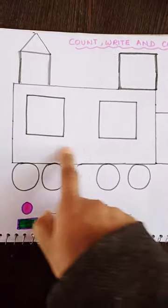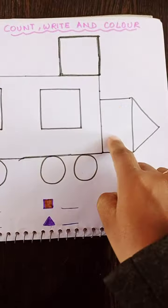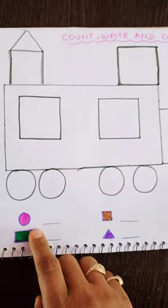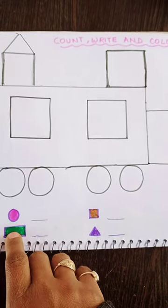Now, this is two rectangle and this is three rectangle. Now, what I will do? I will write here three and I will color the rectangles with green color.